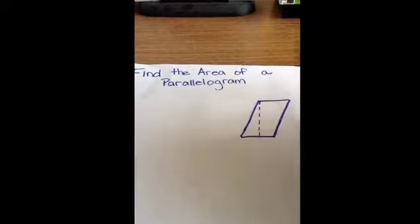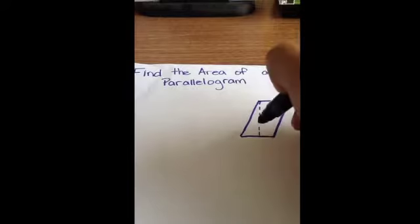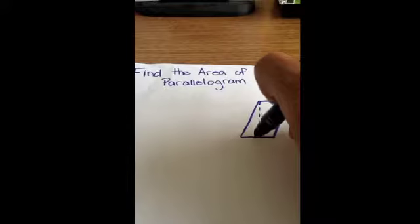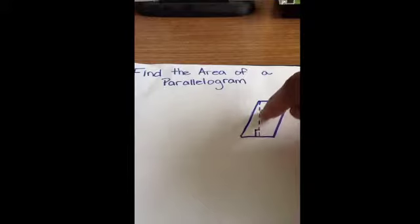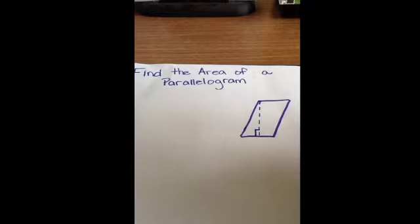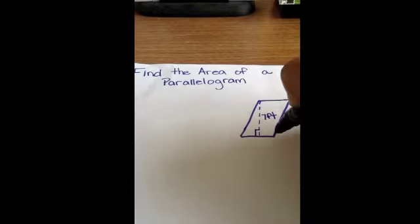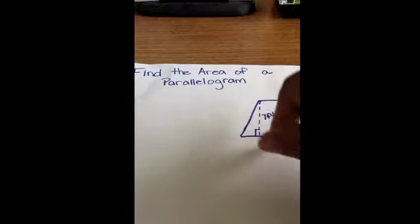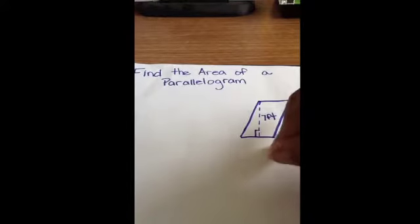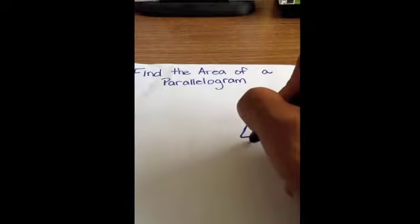These two are parallel and these two are parallel. This is the height - the staggered line going up from the bottom to the top is the height of the parallelogram and we'll make that seven feet. This side, the diagonal side of the parallelogram, we'll say that is eight feet, and the bottom or the base of the parallelogram we'll call that five feet.